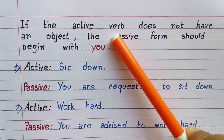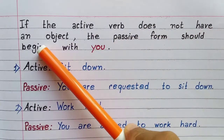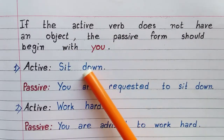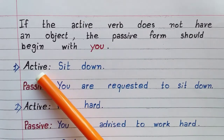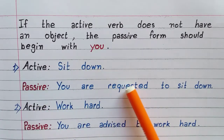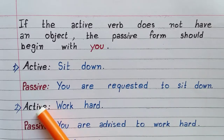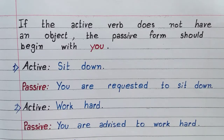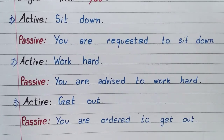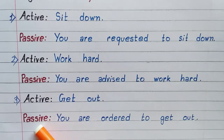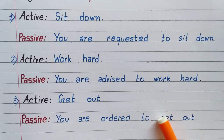If the active verb does not have an object, the passive form should begin with 'you.' Number one — Active: sit down. Passive: you are requested to sit down. Number two — Active: work hard. Passive: you are advised to work hard. Number three — Active: get out. Passive: you are ordered to get out.